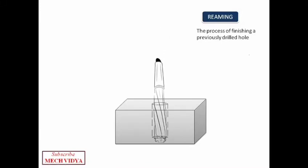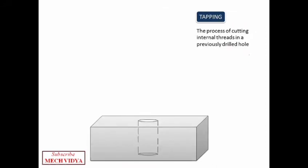Now after reaming one more operation we have is known as tapping which is used to cut internal threads in a hole. To do this we have a specialized tool called a tap which has multiple sharp edges around the outer periphery of the tool.